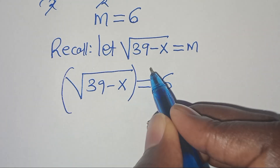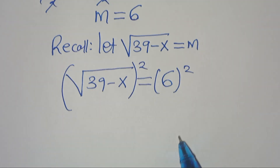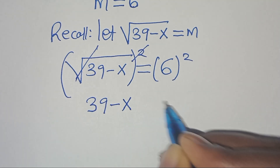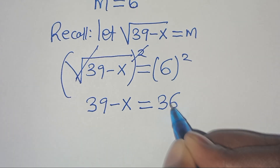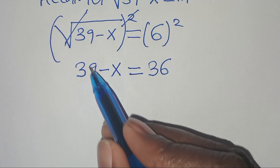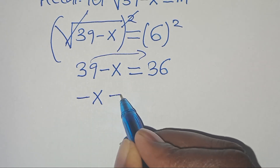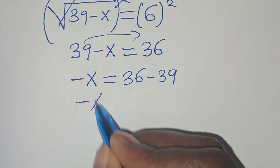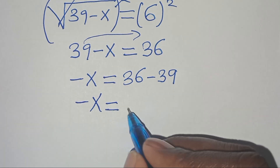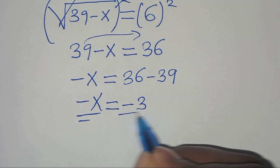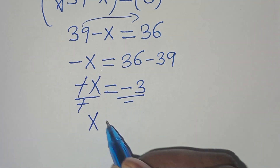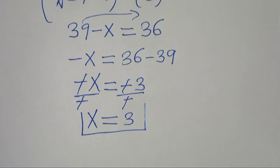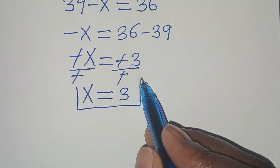Squaring both sides eliminates the square root sign, giving 39 minus x equals 6 squared, which is 36. Taking 39 to the right-hand side: minus x equals 36 minus 39, which equals minus 3. Dividing both sides by minus 1, x equals 3. Let's proceed to Method 2.